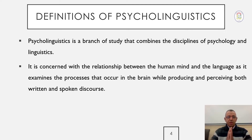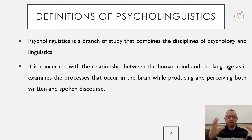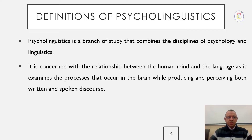We usually refer to such a combination as a hybrid discipline. As mentioned, it belongs to macro-linguistics. It is a discipline that combines psychology and linguistics and studies the relationship between them. Psycholinguistics is concerned with the relationship between the human mind and language, as it examines the processes that occur in the brain while producing and perceiving both written and spoken discourse.